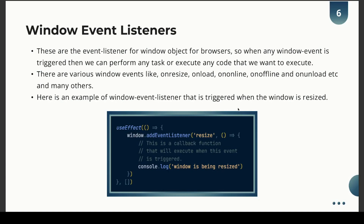Window event listeners are for the browser's window object. When any window event is triggered, we can perform any task or execute the code we want. For example, in this code snippet I am using the resize event as a window event listener. The syntax is window.addEventListener — just like vanilla JavaScript, nothing complex.